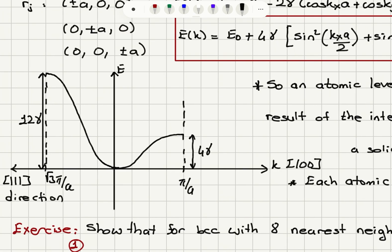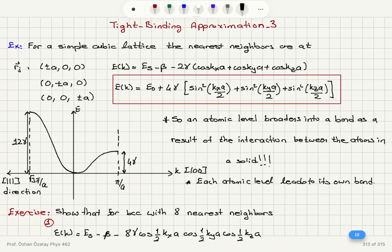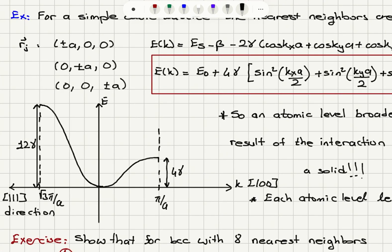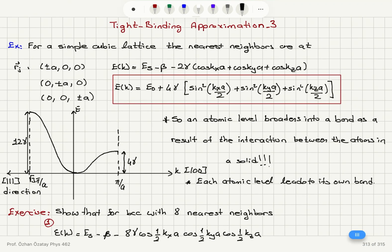However, if we are in the 1,1,1 direction, the K value is √3·π/A. We would get a contribution of 1 plus 1 plus 1 from the sine-squared terms, giving us 3, so the bandwidth is 12γ in this direction. We see that an atomic level broadens into a band as a result of the interaction between atoms in the solid, and each atomic level leads to its own band.